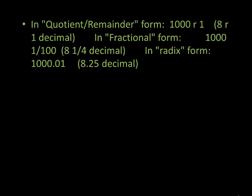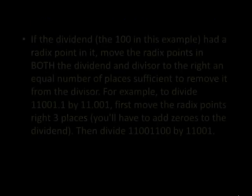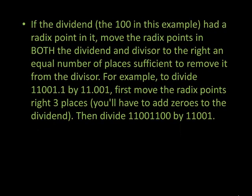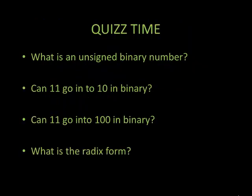Remember that you can have your answer in more than one form: the quotient-remainder form or the fractional form. If the dividend had a radix point in it, move the radix point in both the dividend and divisor to the right an equal number of places sufficient to remove it from the divisor. For example, to divide 11001.1 by 11.001, first move the radix points right three places, adding zeros to the dividend as needed, then divide. Now please take part in our little quiz.